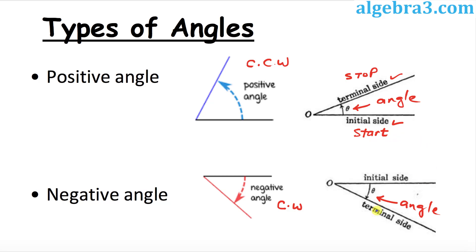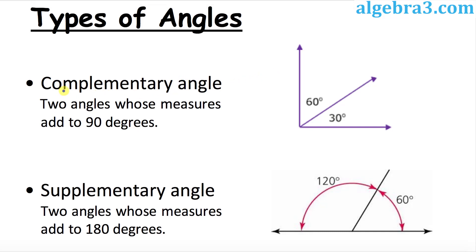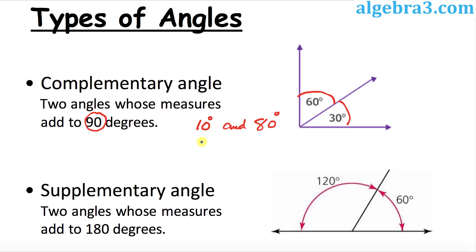Finally, we will talk about complementary and supplementary angles. Complementary angles are two angles that add up to 90 degrees. For example, 30 degrees and 60 degrees add up to 90, so they are complementary angles. Another example: 10 degrees and 80 degrees also add up to 90 degrees, making them complementary angles as well.